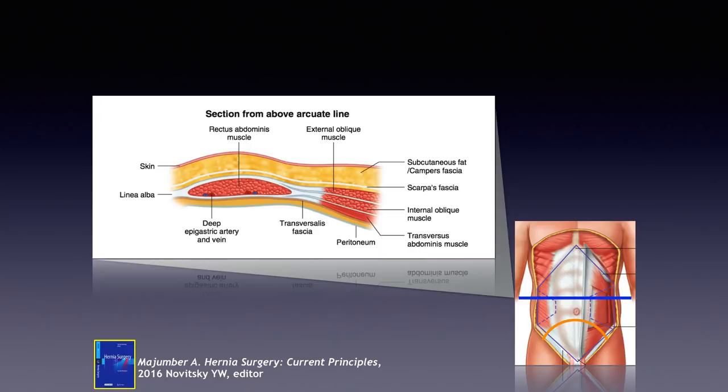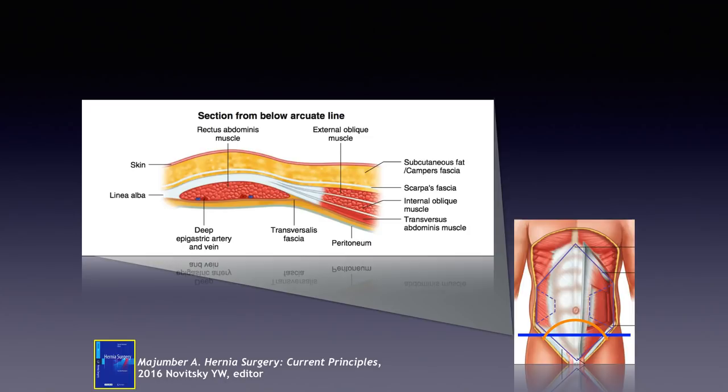Below the arcuate line, there is no posterior rectus sheath. You have the rectus abdominis muscle, then the transversalis fascia, followed by the peritoneum. In the suprapubic region, you essentially have the peritoneal umbilical ligament flap associated with the bladder.